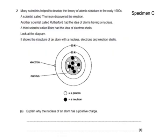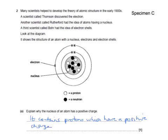Here's a past paper question. Many scientists helped develop the theory of atomic structure in the early 1900s. Thomson discovered the electron, Rutherford had the idea of atoms having a nucleus, and Bohr had the idea of electron shells. The question asks: explain why the nucleus of an atom has a positive charge. It contains protons, which have a positive charge, and neutrons, which have no charge.